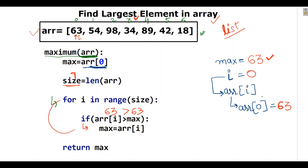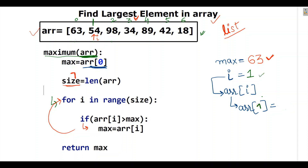The for loop continues for i equal to 1. At index 1, ARR[1] has the value 54. We check: is 54 greater than 63 (the current max)? No — so it won't go inside the if condition, and the loop continues.